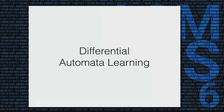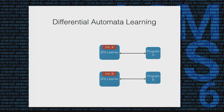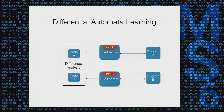Using these learning algorithms, we created what we call differential automata learning — differential testing based on automata learning. We have two programs and two instances of the learning algorithm. These learning algorithms talk with their respective programs and at some point output a model. That model might be correct or incorrect — probably incorrect. We then have a difference analysis algorithm that takes the two models and finds differences, finding inputs in which model A and model B behave differently.